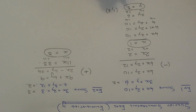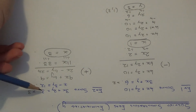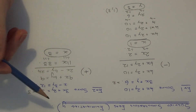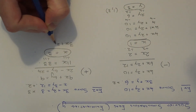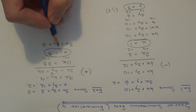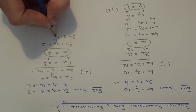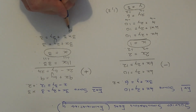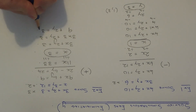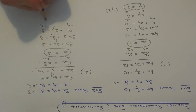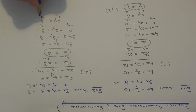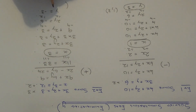We've found the value of x, so we just need to find y. Substituting x equals 3 into the first equation: 3x plus 2y equals 3 becomes 3 times 3 plus 2y equals 3, so 9 plus 2y equals 3. Taking 9 off both sides gives 2y equals minus 6, and dividing both sides by 2 gives y equals minus 3. So our solution for this pair of simultaneous equations is (3, −3). Thanks for watching.